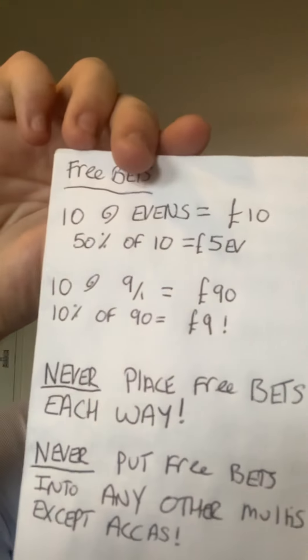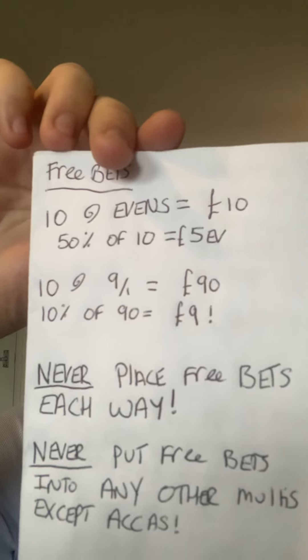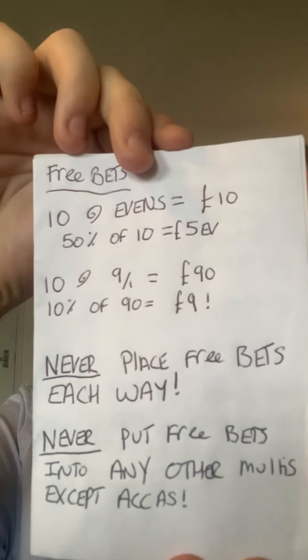But what if the man put it on a 9 to 1 shot instead of an even money shot? £10 at 9 to 1 is £90, minus the stake return, so it ends up as £90. What's the percent chance of a 9 to 1 winning? It's 10%. So what's 10% of £90? It's £9. In the first scenario you're only getting £5 EV, and in the second scenario you're getting £9 EV. If you used to place free bets on even money shots and now you follow this advice, you've gained £40 EV over your next 10 bets — and it adds up massively.